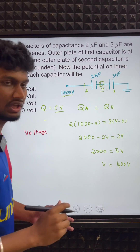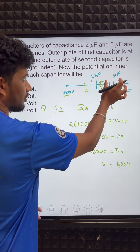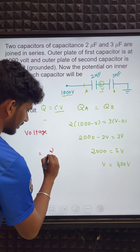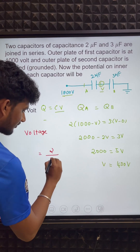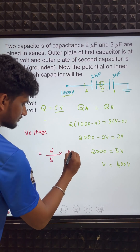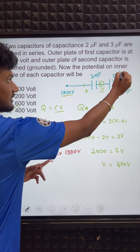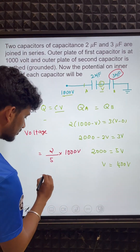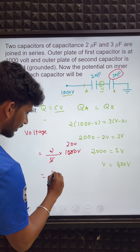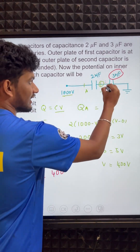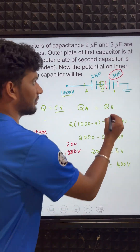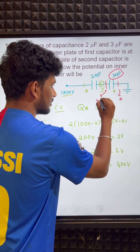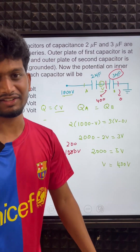We already know the voltage divider rule for resistance; now let's apply it to capacitance. In a series circuit with a 2 µF and 3 µF capacitor, the voltage across the 3 µF capacitor equals its capacitance divided by the sum of both capacitances — that is 3/5 — multiplied by the total voltage of 1000 V. That gives 600 V across the 3 µF capacitor. Since the far plate is at 0 V (grounded), the inner junction is at 0 + 400 = 400 V. The answer is confirmed: 400 V.